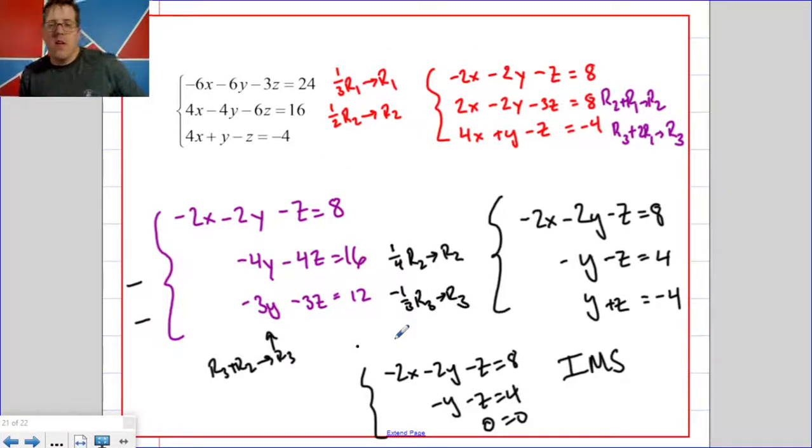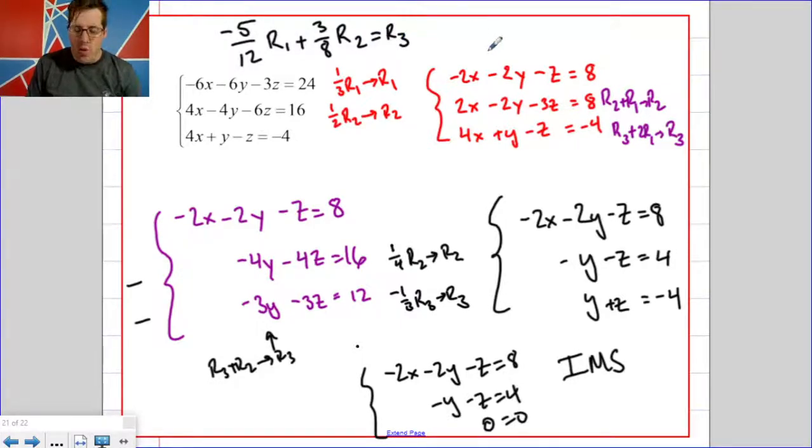So I mentioned this idea of linear dependence. And this is way beyond the scope of our course, but it's really interesting. So I thought I'd throw it in here. The reason that this worked out to be infinitely many solutions is because there's some relationship between row 1 and row 2 and row 3. So in this particular case, and this took me dusting off, remembering how to do long forgotten math, but in this particular case, if you take negative 5 12ths times row 1 plus 3 8ths times row 2, you get row 3. Or put into maybe simpler terms, negative 10 row 1 plus 9 row 2 equals 24 row 3. That's where the term linearly dependent comes from because row 3 depends on rows 1 and 2.